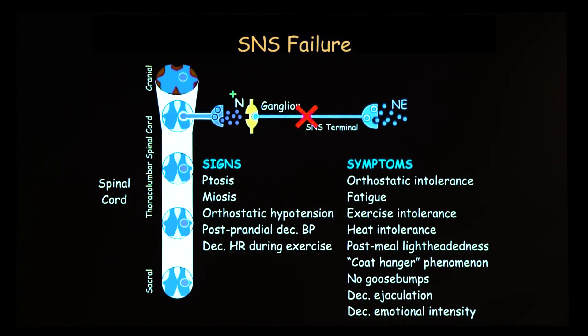When it comes to symptoms of sympathetic noradrenergic system failure: orthostatic intolerance — that's because of the orthostatic hypotension — fatigue, exercise intolerance, and heat intolerance. The concept is there's a syndrome. There are understandable symptoms and signs which, when you put them together, tell you this looks like sympathetic noradrenergic system failure.